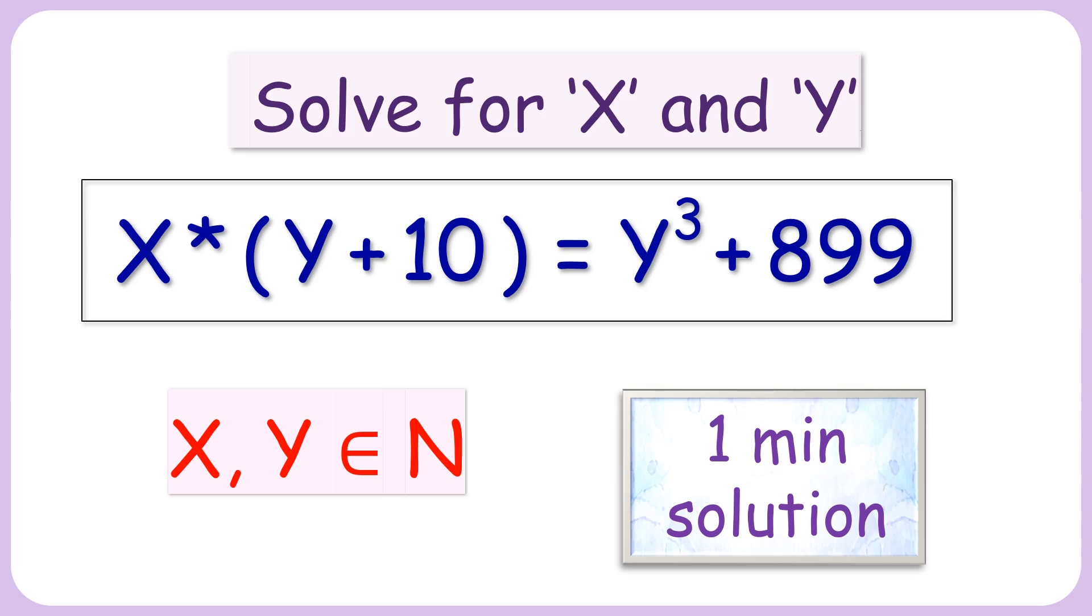We all know that in algebra to get the value of two variables we need two equations, but in today's question we have a single equation in two variables where X and Y are natural numbers. Let's solve this amazing question with a simple solution.